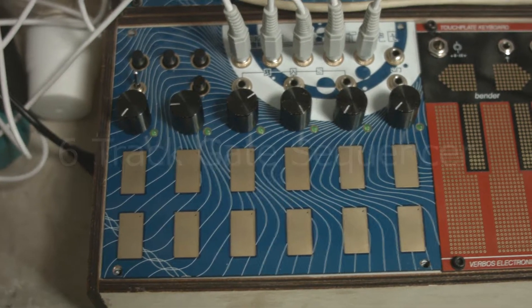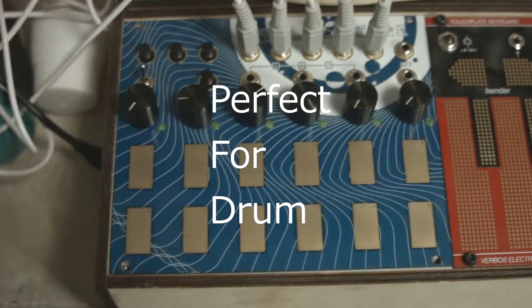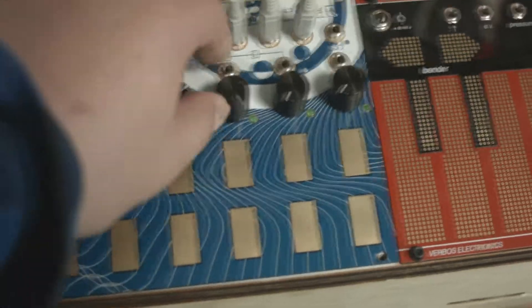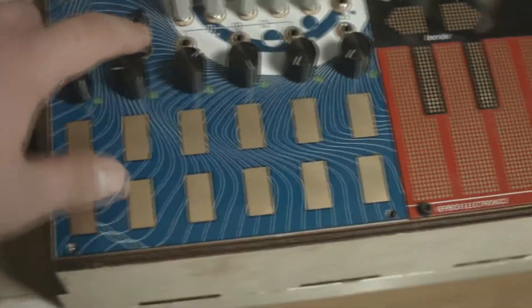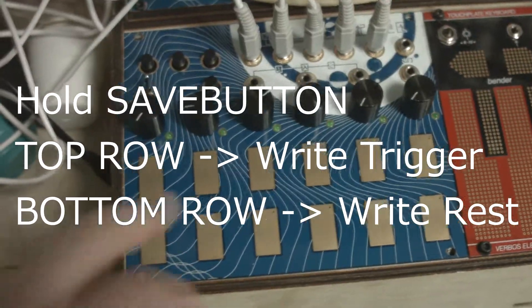Here's a new function in Voltage Memory: it's a six-track gate sequencer, perfect for drums. It's a fourth sub-mode in Mode 1. To write steps, you hold the save button and tap on the touchpad. The first row of touchpad represents each output.